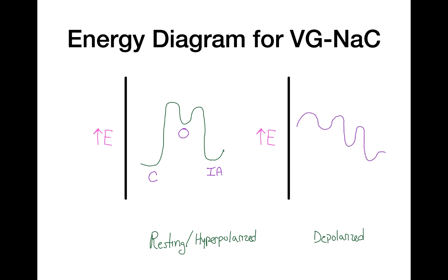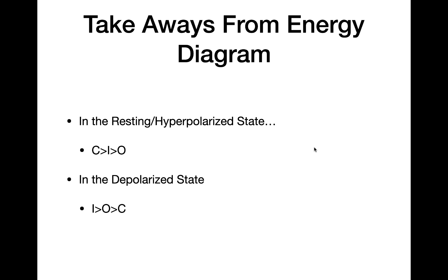When we depolarize the cell, the energy levels of all states change. In the depolarized state, the most stable state is now the inactive state, the second most stable is the open state, and the least stable is the closed state. This is why sodium channels open in the depolarized state — the open state is more stable than the closed state. In summary: in the resting hyperpolarized state, closed is most stable, then inactive, then open. In the depolarized state, inactive is most stable, followed by open, then closed.